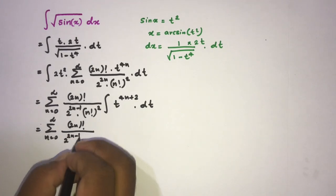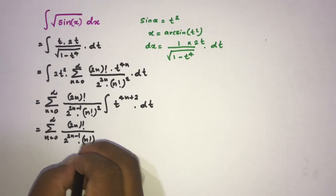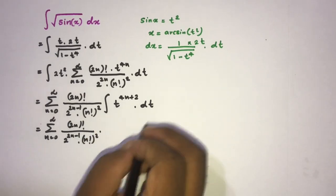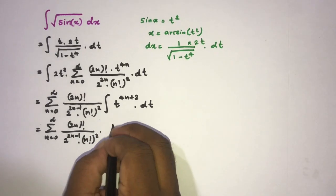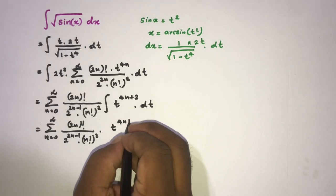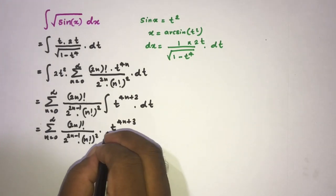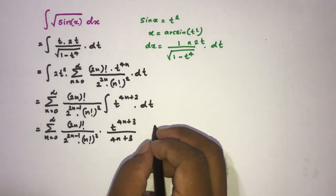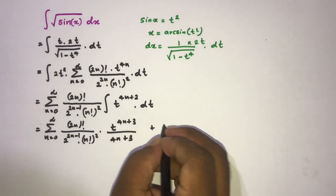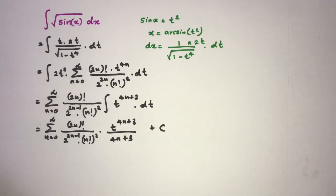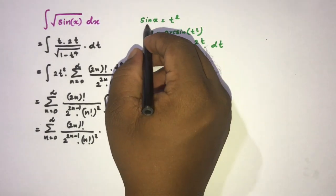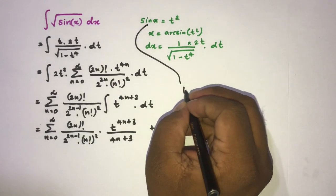Now we can integrate using the power rule. The integral of t to the (4n plus 2) gives t to the (4n plus 3) over (4n plus 3), plus a constant C.